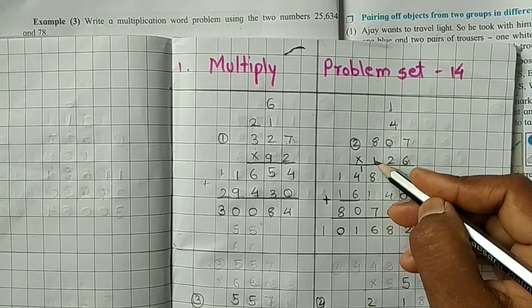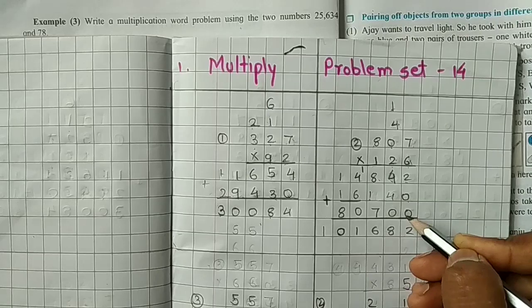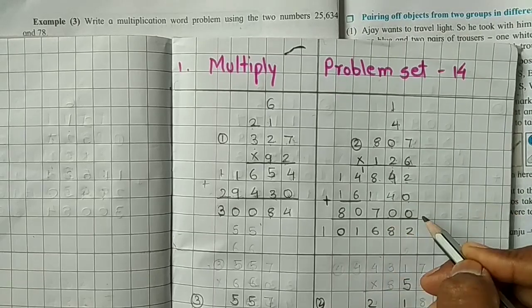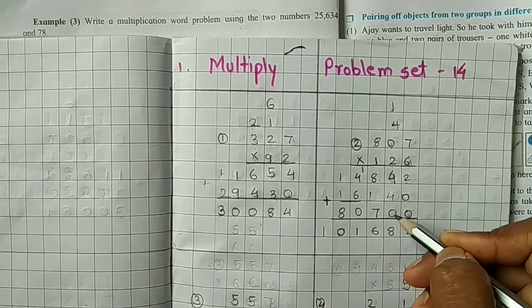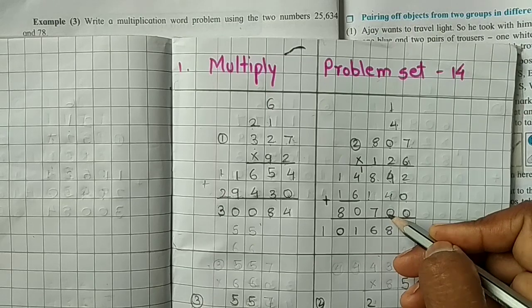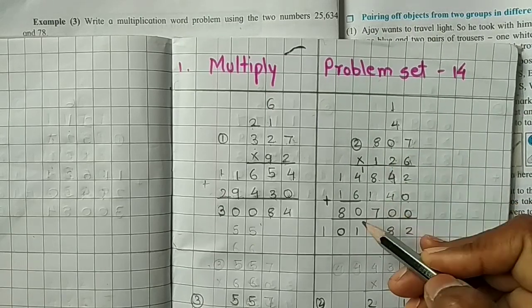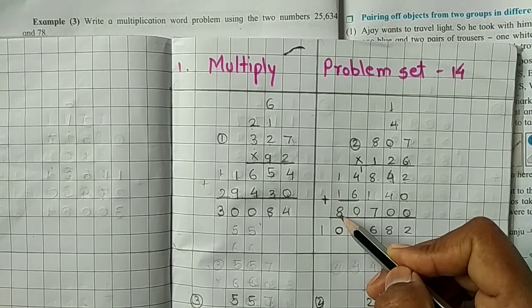Next, we multiply by 1. Remove 2 place from unit place, unit place is over, then 10 place is over also. 1 times 7 is 7, 1 times 0 is 0, 1 times 8 is 8.